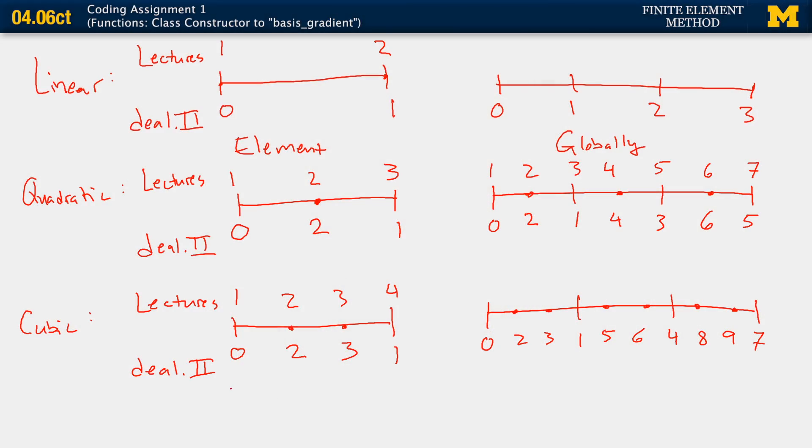This will come into play when we're defining our basis functions. Now, getting back to the code. Why do I have this xi at node? This will take your deal.II node number and it will output the value of xi. So for example here, xi of 0 is equal to minus 1. Xi of 1 is equal to positive 1. Xi of 2 is equal to minus 1 third. And xi of 3 is equal to positive 1 third.